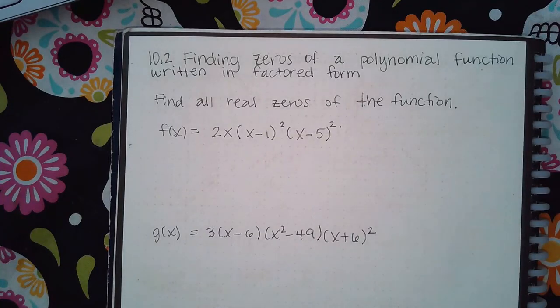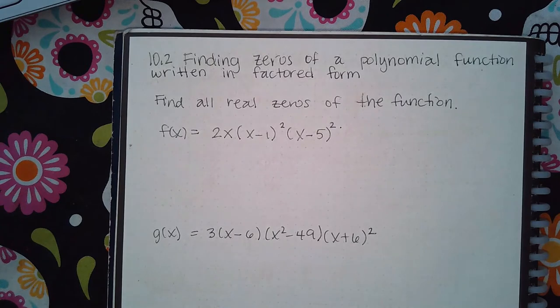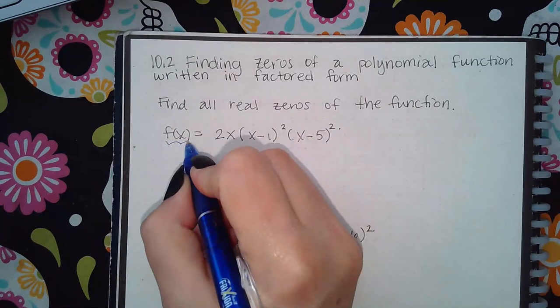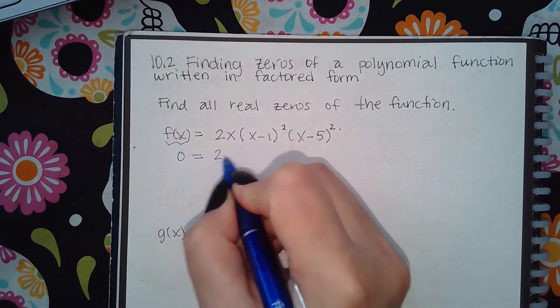Okay, 10.2: Finding zeros of a polynomial function written in factored form. This is very much just like how we did with quadratics. If you want to find the zeros, you set y equal to zero, and since...